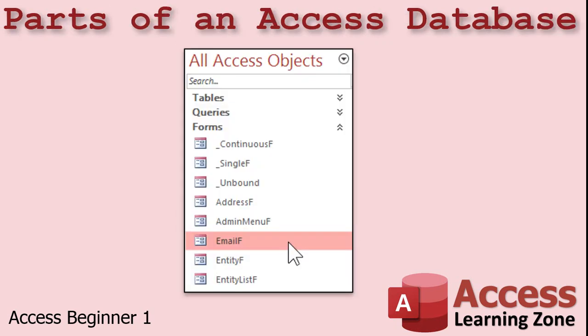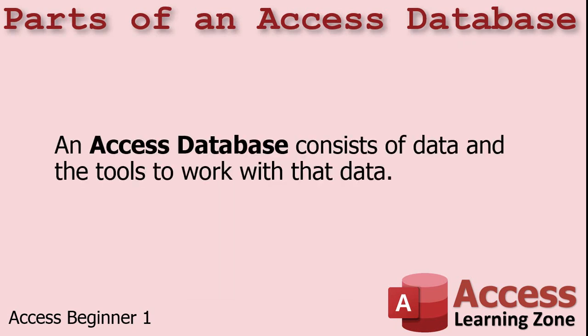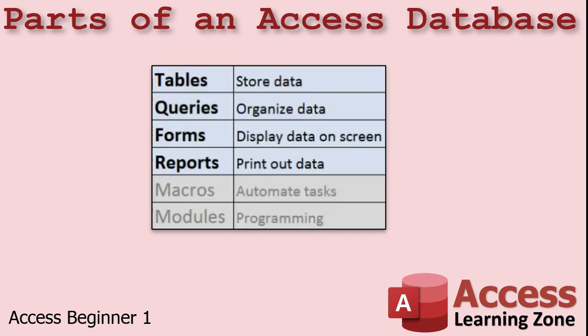Let's talk about the parts of a Microsoft Access database. An Access database consists of data and the tools to work with that data. An Access database consists of tables, queries, forms, reports, and optionally macros and modules.